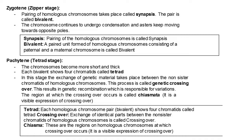Zygotene is the zipper stage, where pairing of homologous chromosomes takes place, called synapsis. The pair is called a bivalent. Chromosomes continue to undergo condensation and asters keep moving towards opposite poles. A bivalent is a paired unit formed of homologous chromosomes consisting of a paternal and maternal chromosome. In pachytene (the tetrad stage), chromosomes become more short and thick. Each bivalent shows four chromatids called tetrads. Exchange of genetic material takes place between non-sister chromatids of homologous chromosomes — a process called genetic crossing over — resulting in genetic recombination responsible for variation. The region at which crossing over occurs is called chiasmata, providing evidence for Mendel's first and second laws.